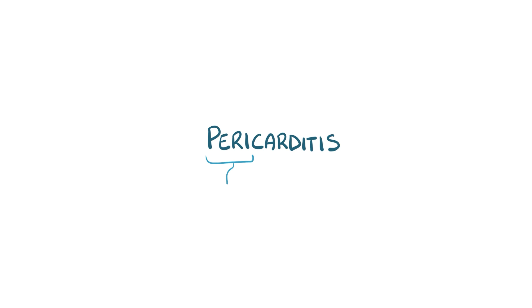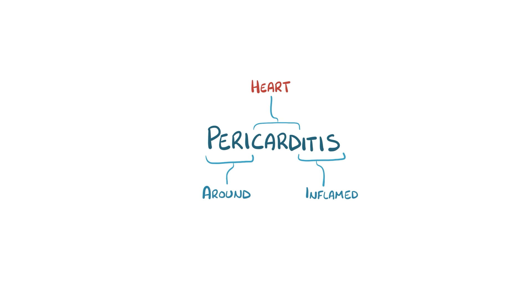With pericarditis, peri means around, card means the heart, and itis means inflamed. So pericarditis means the pericardial layer of tissue that covers the heart has inflammation.